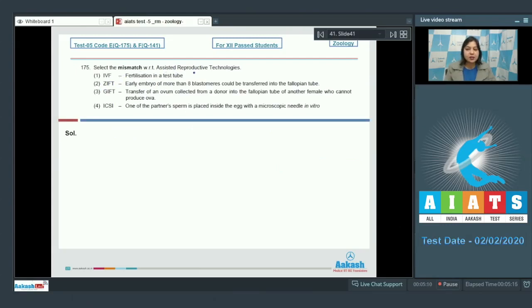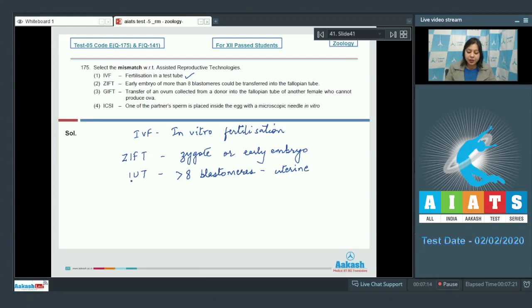Question number 175. Select the incorrect statement with respect to Assisted Reproductive Technologies. Number 1, IVF. The correct answer is correct as IVF is in vitro fertilization. That is fusion of gametes occurs in the laboratory in a test tube. After fertilization the zygote or early embryo is transferred to the fallopian tube of the mother. Or an embryo more than 8 blastomeres is transported to the uterus of the mother which is referred to as intrauterine transfer. Number 2, ZIFT that is zygote intrafallopian transfer. Early embryo of more than 8 blastomeres could be transferred into the fallopian tube. This is incorrect as more than 8 blastomeres will require transfer into the uterus of the mother.